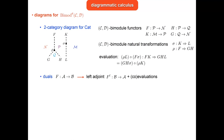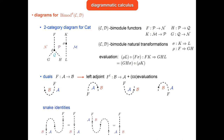The duals are given by the adjoints of the functors. Evaluation and co-evaluation of the adjunction are drawn with a little arrow, satisfying the usual snake identities and pivotality condition: rotating everything by 360 degrees gives back what one had before.